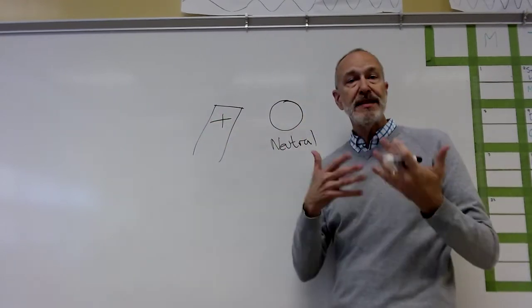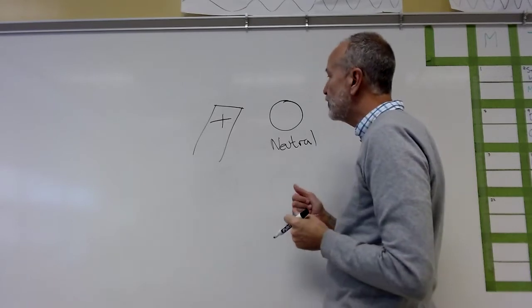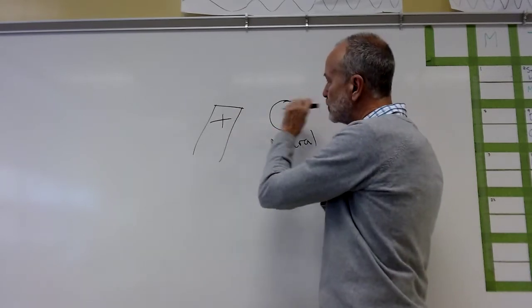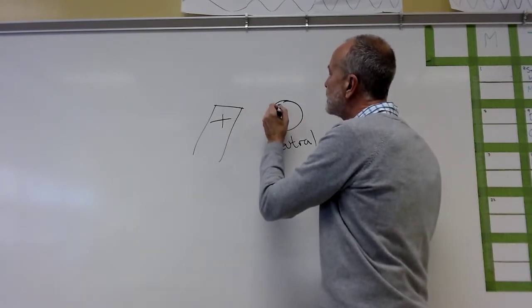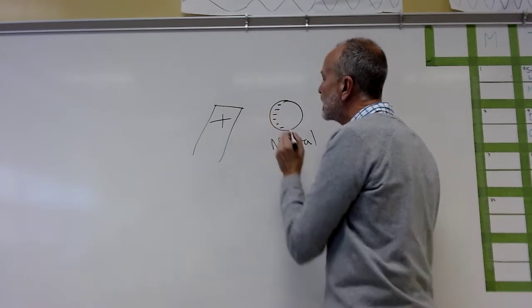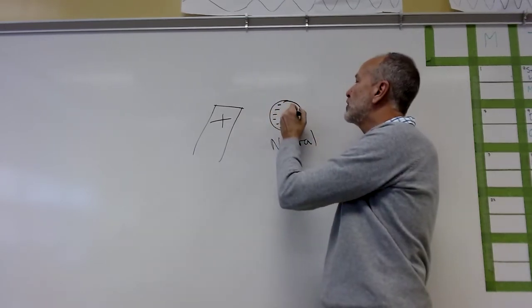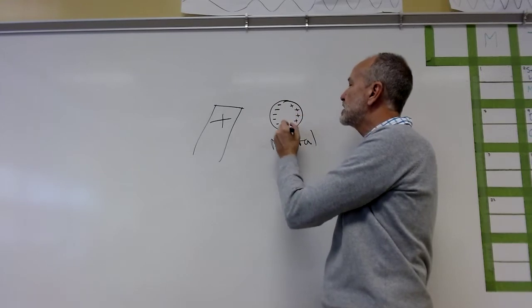What will happen is charges will move in that conductor. How will they move? The electric field is this way, electrons move this way, so you end up having more electrons than protons on that side and more protons than electrons on this side.